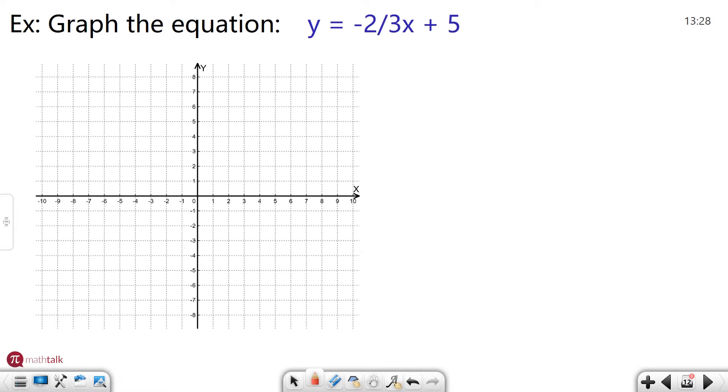And so we have another example that asks you to graph the equation y equals negative 2 thirds x plus 5. So if I look at my slope-intercept formula y equals mx plus b, my y-intercept is positive 5. So I'm going to go to positive 5 on the y-axis and draw a dot.